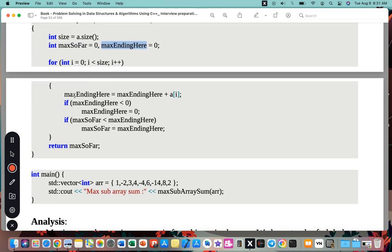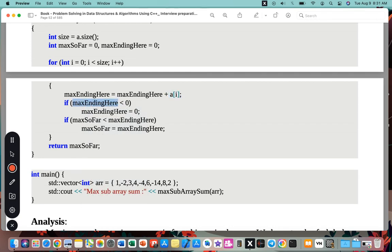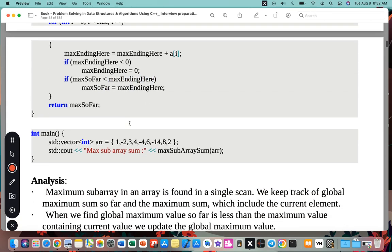And maximum ending here. We start maximum ending here as plus this. Maybe this is smaller than zero, then the maximum ending is zero. Maximum so far is minimum, then maximum ending. Then it equals, I'll start with zero, just like that.